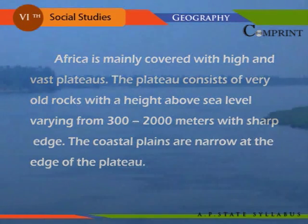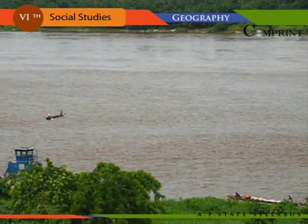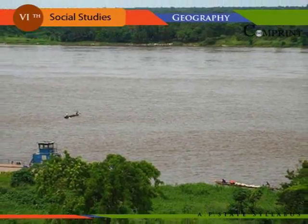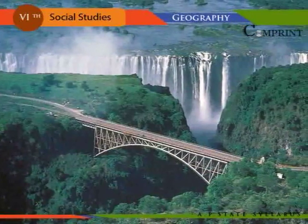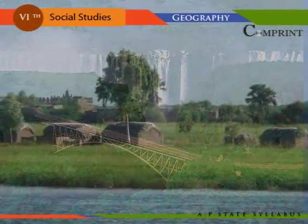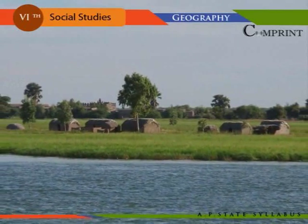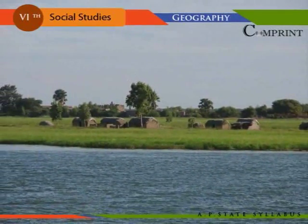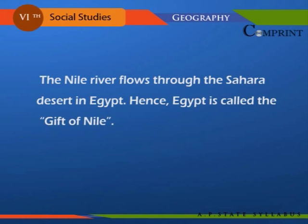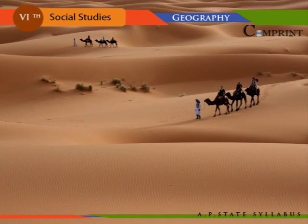The important rivers of Africa are the Nile, the Congo, the Niger, the Zambezi, the Limpopo, and the Orange. The Nile is the longest river in the world; it rises at Lake Victoria. The famous Victoria Falls is on the river Zambezi. The Nile flows through the Sahara desert in Egypt; hence Egypt is called the gift of the Nile.